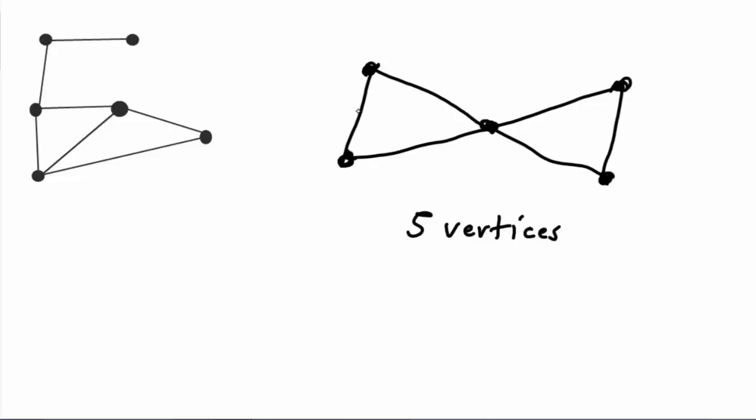Before we do that, let's look at a similar example. Suppose I have a graph with five vertices and I draw in edges in the following manner, and I ask the same question: how many spanning trees are there? This is not a complete graph, so we don't have an easy formula. We can say there are five vertices and six edges.